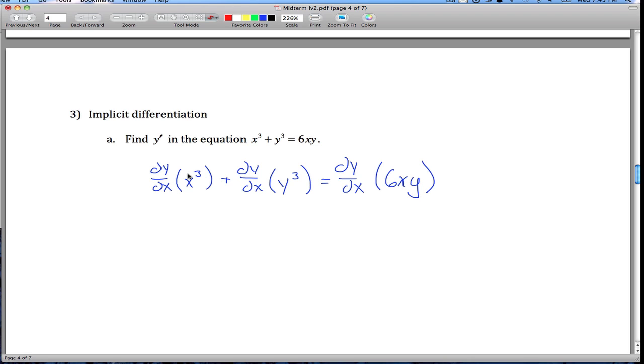This one's easy enough, the derivative of x cubed is just 3x squared. This one here is not quite as easy, you've got to think about it like it's the chain rule, the outside function is x cubed, the inside function is y, so what that gives you is 3y squared and you have to multiply by the derivative of the inside function, so you've got y prime.